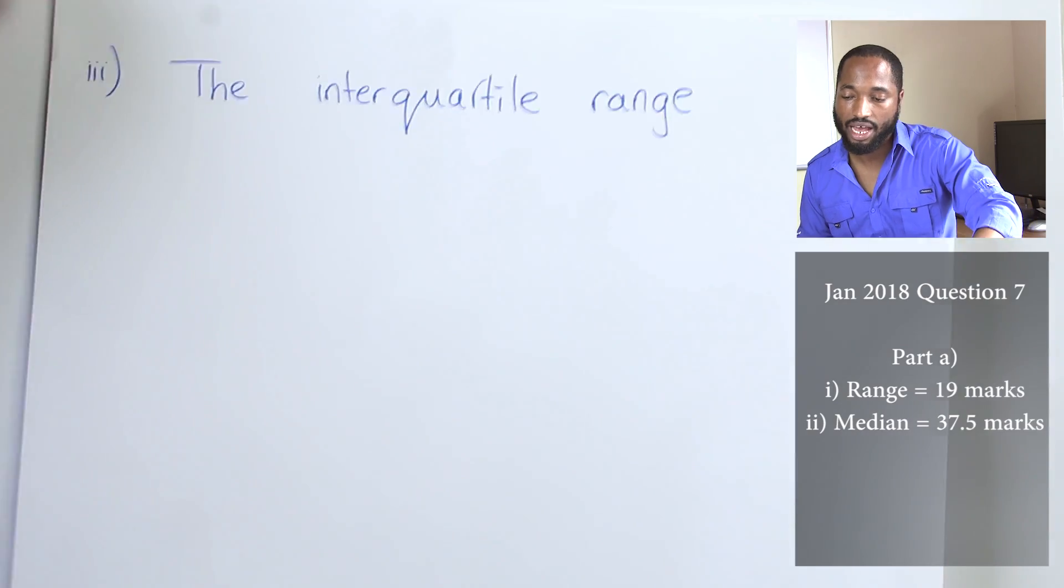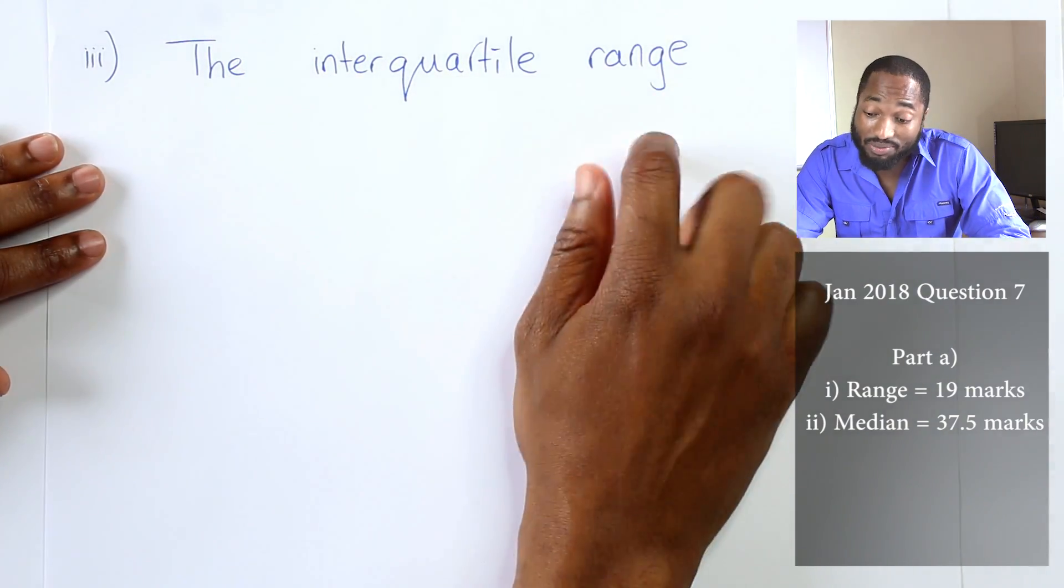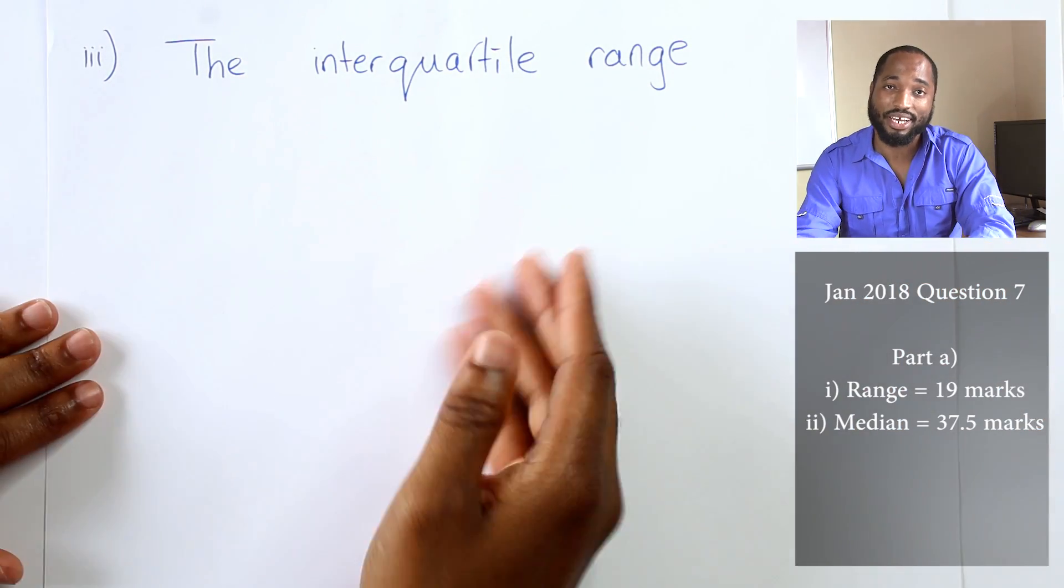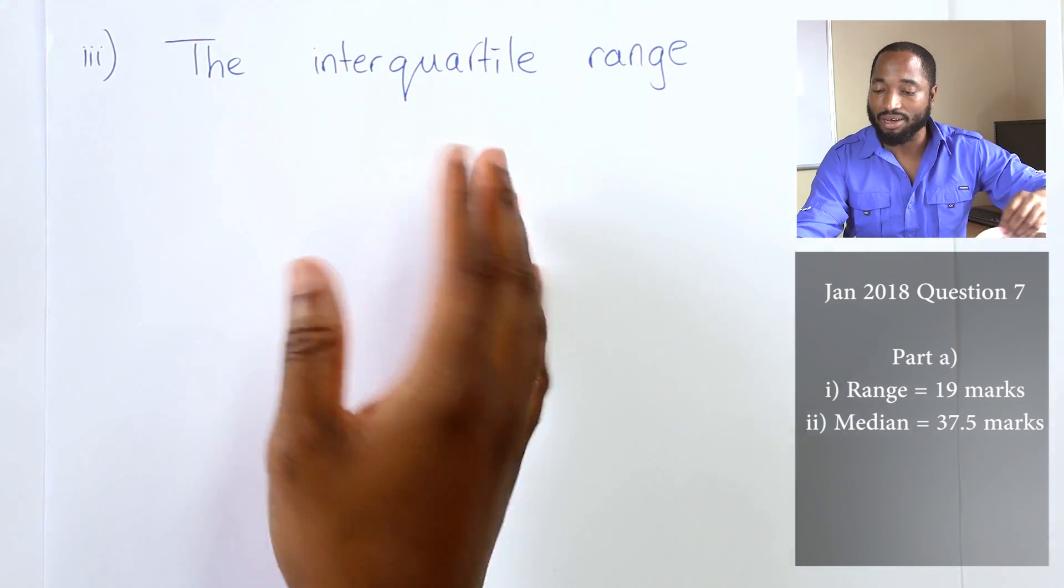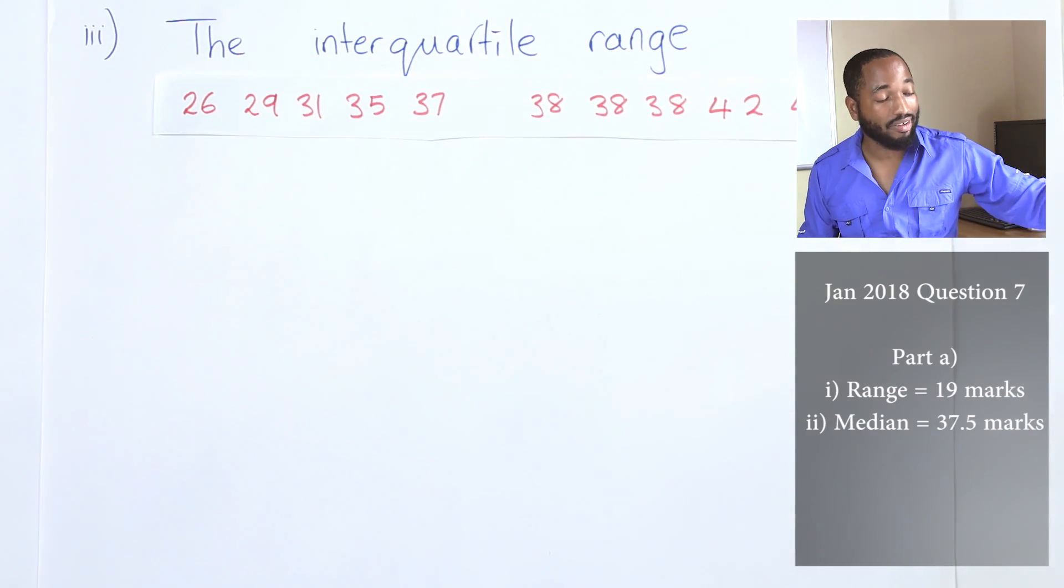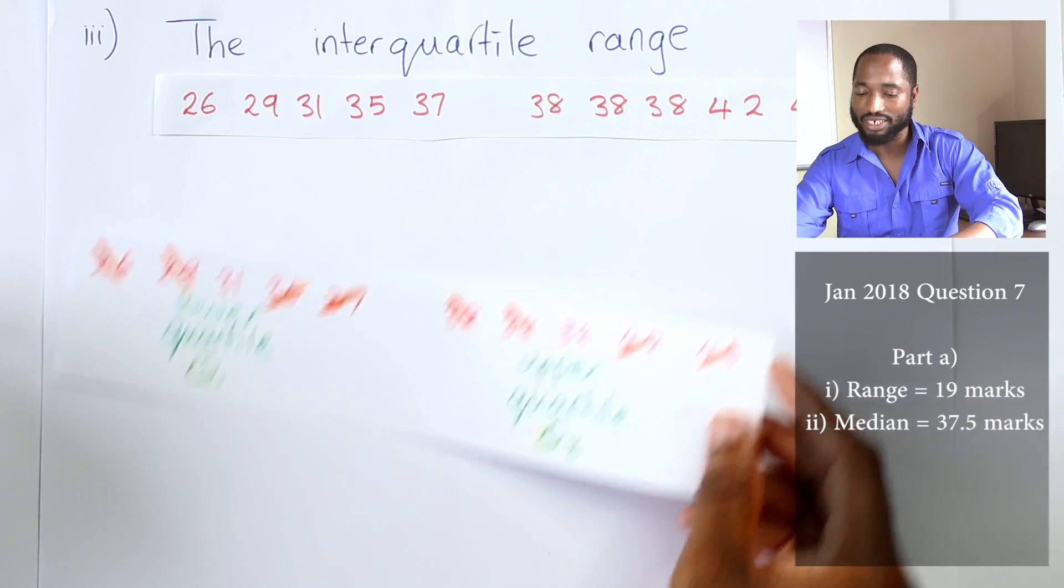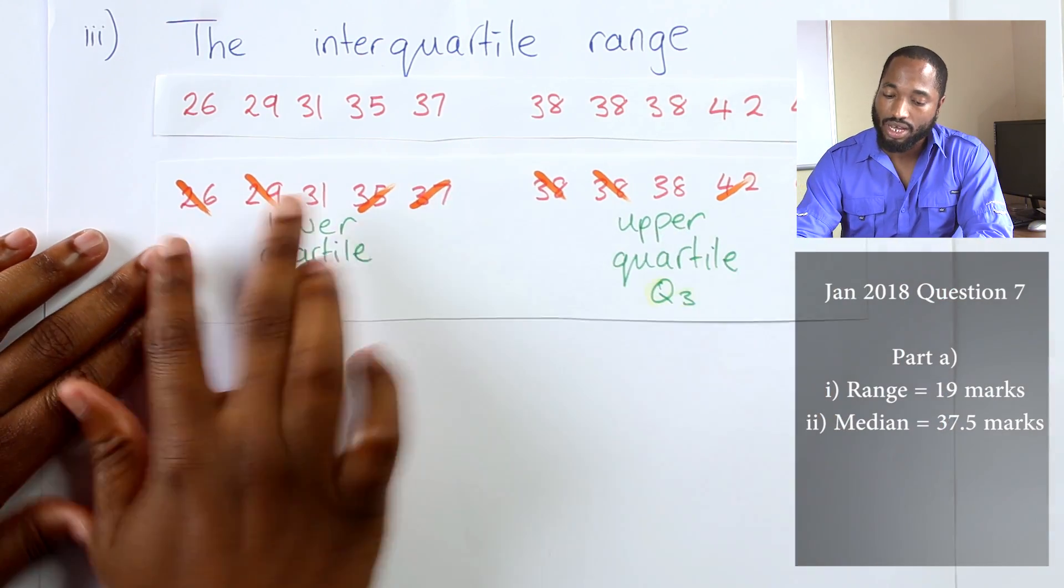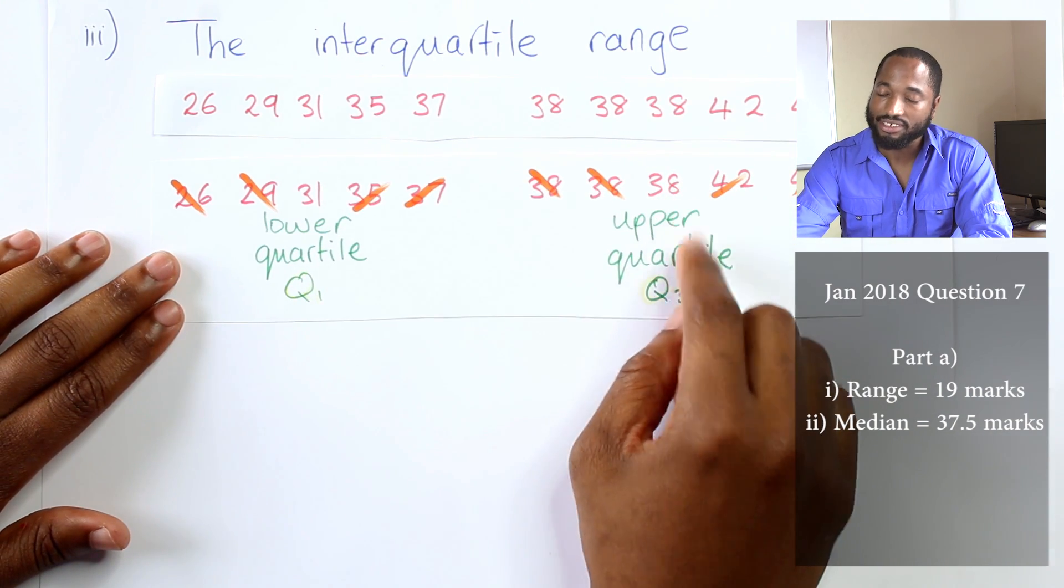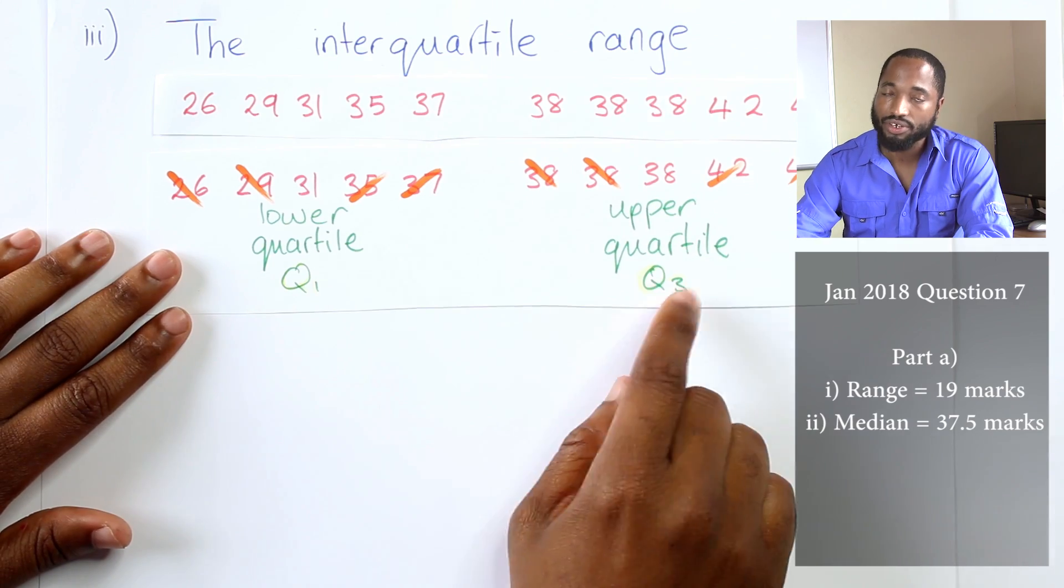Next up, they asked about interquartile range. Part three is the interquartile range. We didn't see this in a while, so that was nice to see. To find the interquartile range, quickest thing to do is split the values into two, upper half, lower half, and find the median of the lower half and the median of the upper half. There's a formula but for two marks this is the quickest thing you should do. Cross out.